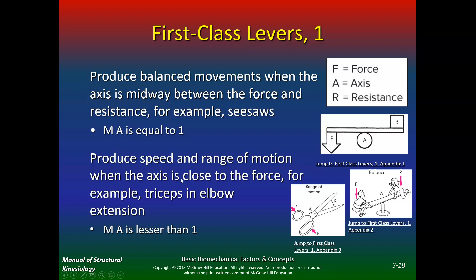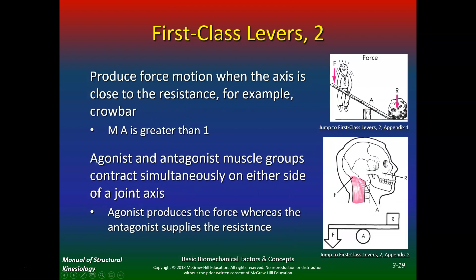A first class lever can also produce force when the axis is closer to the resistance — for example, a crowbar, where mechanical advantage is greater than one. If you extend the lever arm, you can easily move a rock. Everyday examples for first class levers are scissors and seesaws, and in the body, the triceps are a first class lever example.